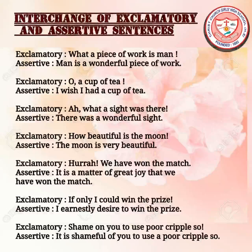Interchange of exclamatory and assertive sentences: Exclamatory 'What a piece of art is man!' becomes assertive 'Man is a wonderful piece of work.' Exclamatory 'Oh for a cup of tea!' becomes 'I wish I had a cup of tea.' Exclamatory 'Ah, what a sight was there!' becomes 'There was a wonderful sight.' Exclamatory 'How beautiful is the moon!' becomes 'The moon is very beautiful.' Exclamatory 'Hurrah, we have won the match!' becomes 'It is a matter of great joy that we have won the match.'